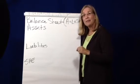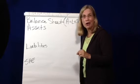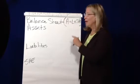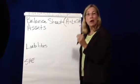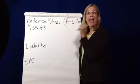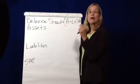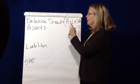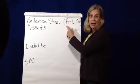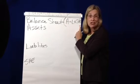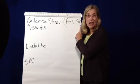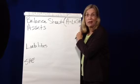You'll see that spells ALOE, doesn't it? So for a sole proprietorship or partnership: ALOE. For a corporation: assets equal liabilities plus shareholders or stockholders equity.